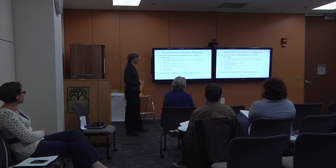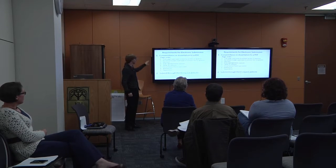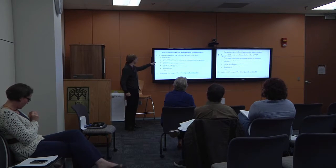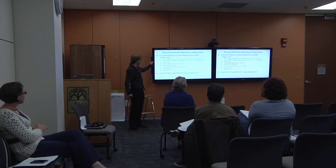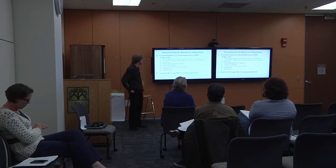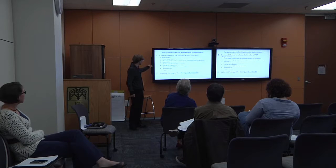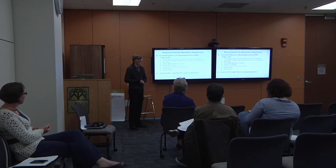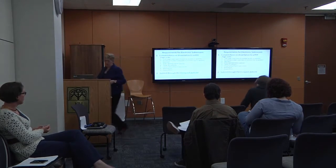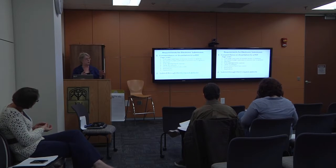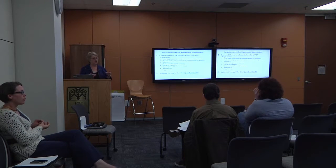Going back to the requirements for a dissertation or thesis, here is the required order for your final copy: title page first, with no signatures from your chair or committee members; acceptance page with no signatures; abstract; acknowledgements, which is entirely optional; table of contents; then the content of your dissertation or thesis; references; and then appendices. You then submit this through the ProQuest website. I want to pause and see if there are any questions before I move into the actual submission process.